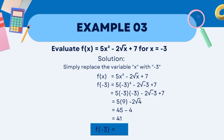Now solve. Prioritize the exponent. Negative 3 raised to the power of 2 is negative 3 times negative 3, which equals positive 9. 5 times 9 is 45. Then evaluate negative 3 plus 7, which equals 4. Negative 2 times the square root of 4 equals negative 4. 45 minus 4 equals 41. Therefore, f(−3) = 41.